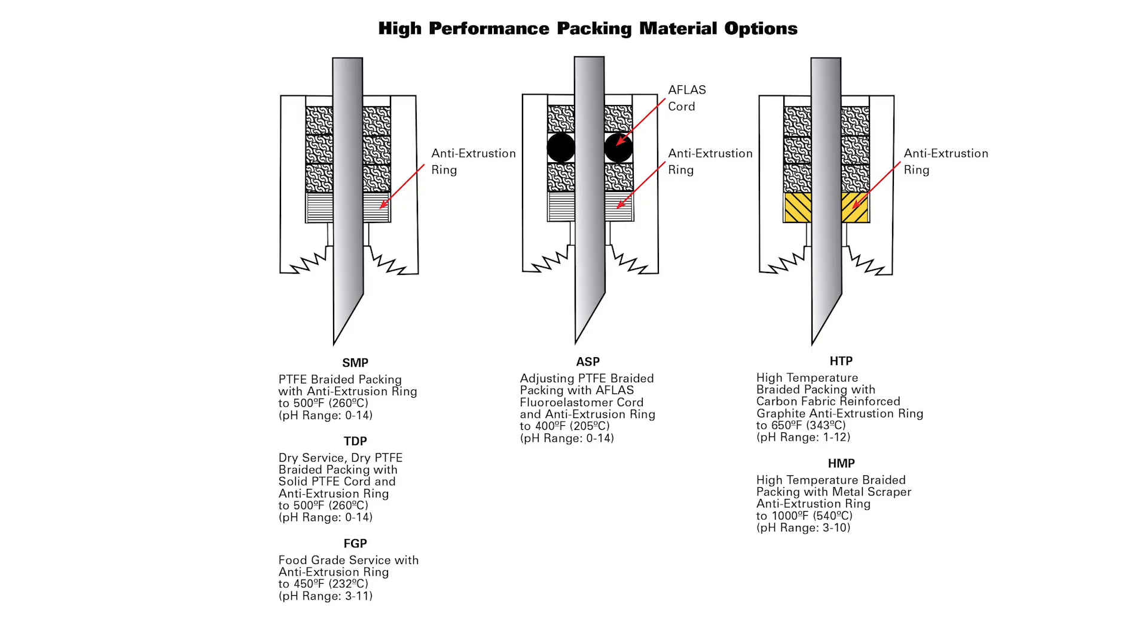DeZurek provides convenient packing kits for each valve size that include the proper components for the high performance packing option in your knife gate valve. Components can include an anti-extrusion ring of PTFE or copper wire scraper, high temperature carbon graphite, square braided packing, and an energized packing cord.